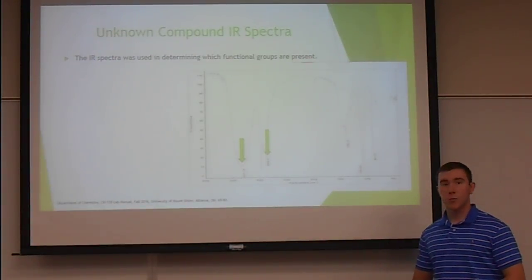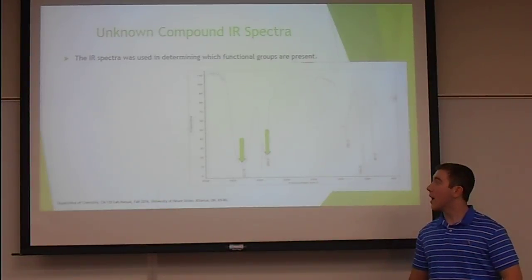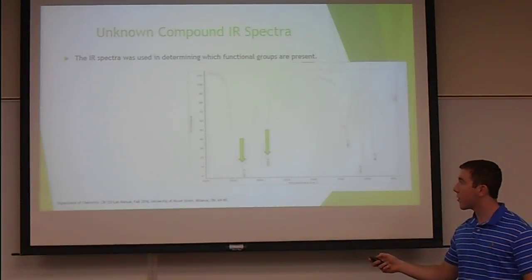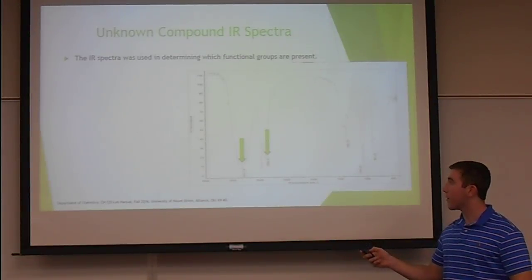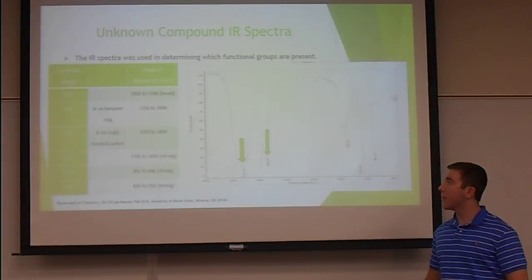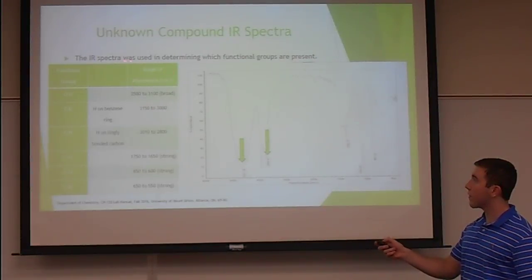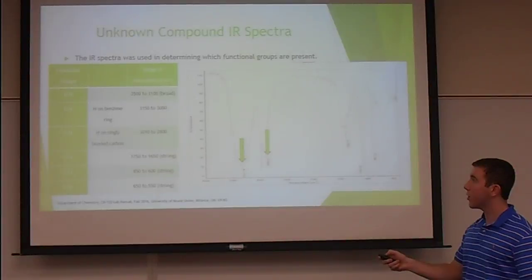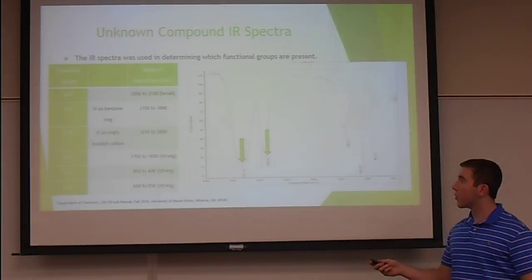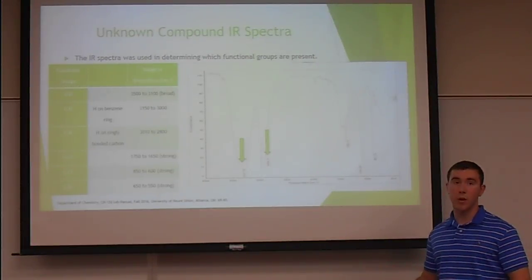This was the spectra obtained by the infrared spectrometer. You can see that we have two absorption peaks at 3,331 and 2,884. Comparing it to the table in the chemistry lab manual, we can see that 3,331 falls between 3,500 and 3,100, giving us an OH functional group, and 2,884 falls between 3,010 and 2,800, giving us a CH singly bonded carbon.